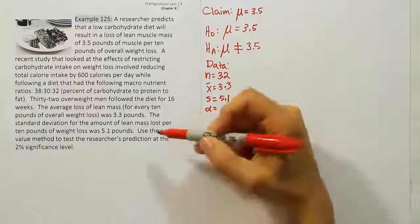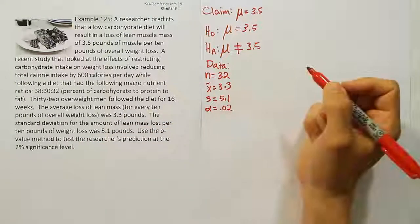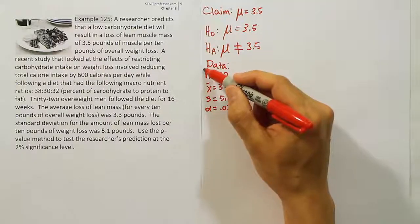Finally, alpha - it says we should use a 2% significance level, so 0.02. There's our data for the problem.